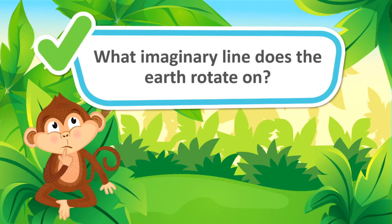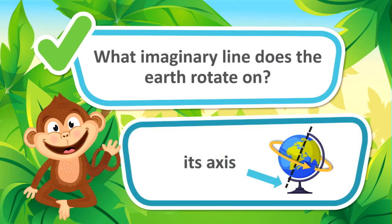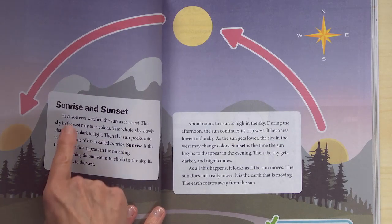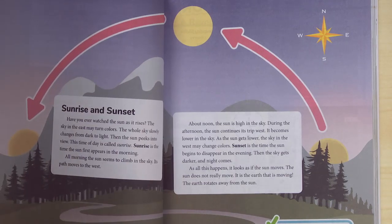Now it's time for Quick Check. What imaginary line does the Earth rotate on? Its axis. I want you to look at pages 88 and 89 — you are going to be reading about sunrise and sunset. As you read, I want you to find out if the sun moves across the sky.